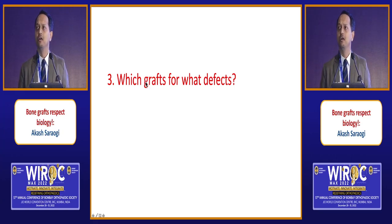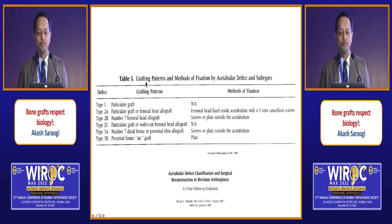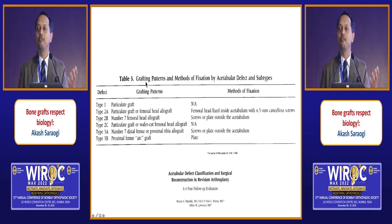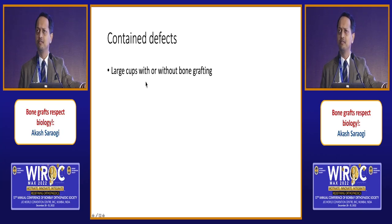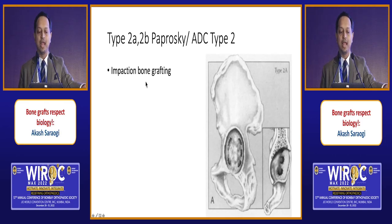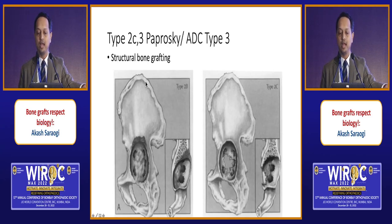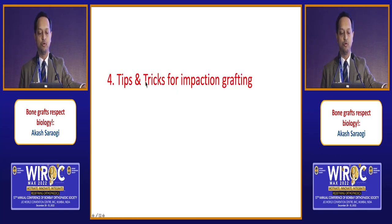Which grafts are available for which defects? Looking at the original Paprosky article, graft could be used for every bone loss case from Type 1 to 3B. Being realistic today: for most contained defects, large jumbo cups with or without bone grafting are used. For Paprosky Type 2A and 2B and ADC Type 2, impaction bone grafting has proven its merit. For Type 2C, Grade 3, and ADC Type 3, there is a role for structural bone grafting.